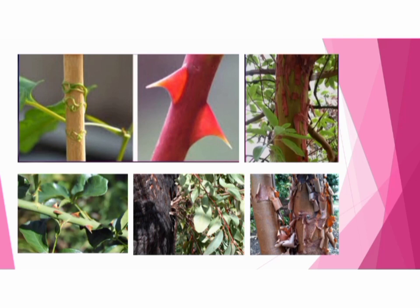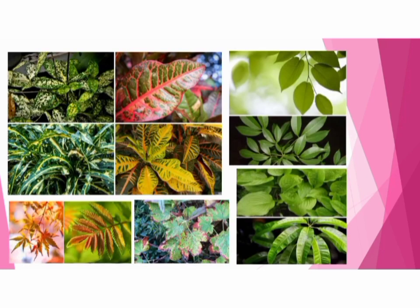So now you can see some pictures of different kinds of stems. Stems are also different in color, shape and size. Some stems have thorns and some stems have a thick bark. Likewise, leaves are also different from each other in color, shape and size.